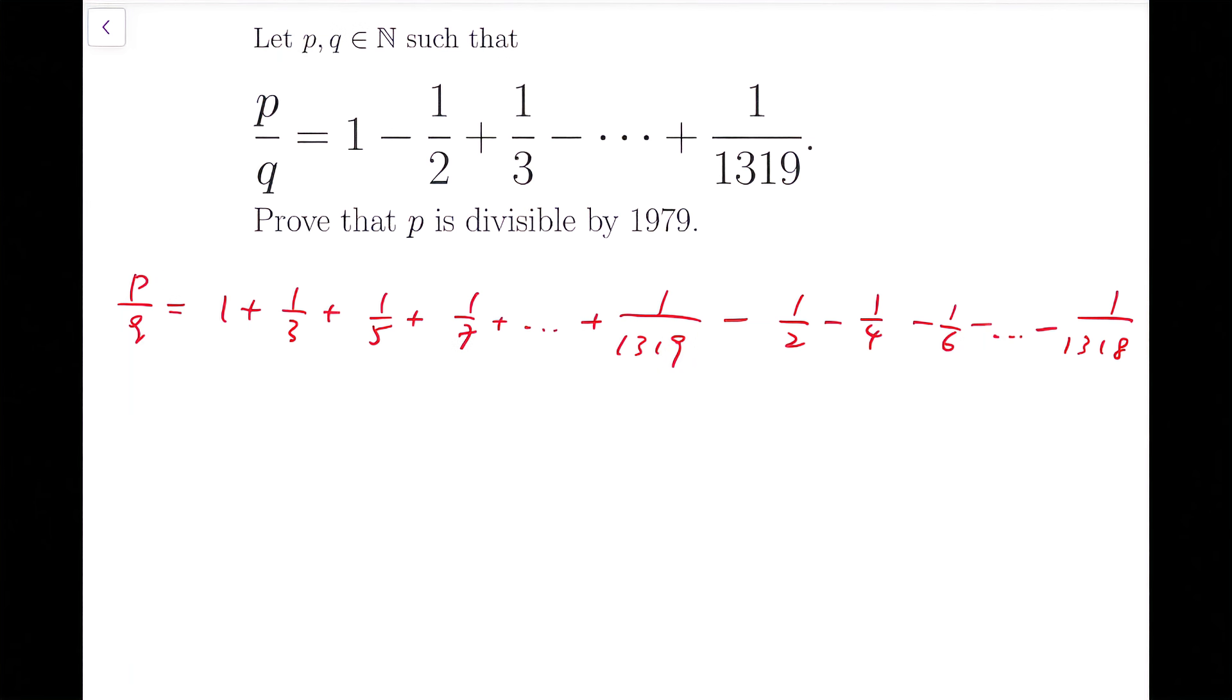So after regrouping, the first half, all the adding terms are actually hard to manipulate because it's neither some kind of harmonic series nor anything special. So I'm going to add in some even terms so to make all the fractions like the denominators to be consecutive. So I'm going to add 1 over 2, 1 over 4, etc. into this part.